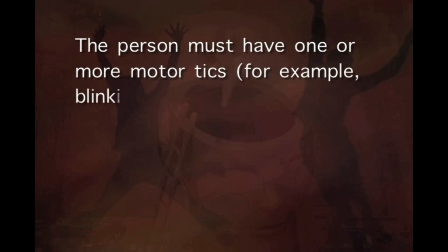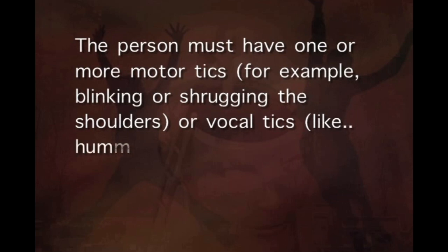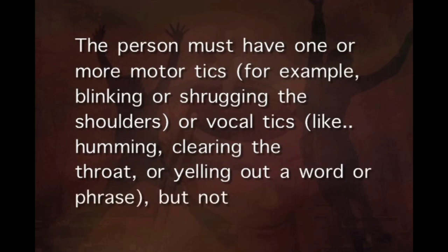Once we have seen the classification, let us try to understand the diagnosis of TICs disorders. For a person to be diagnosed with a chronic TICs disorder, he or she must meet the following criteria. The first criterion is the person must have one or more motor TICs — for example, blinking or shrugging the shoulders — or vocal TICs like humming, clearing the throat, or yelling out a word or phrase, but not both.